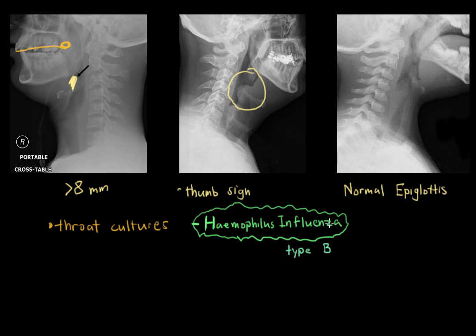More specifically, it was Haemophilus influenzae type B that caused epiglottitis. But thanks to modern medicine, we have a vaccine called HIB — Haemophilus influenzae B vaccine — which has helped decrease the incidence of epiglottitis. Some other bugs known to cause epiglottitis, but not as severely as H-flu, are Staph and Strep: Strep pneumoniae, Strep pyogenes, and Staph aureus.